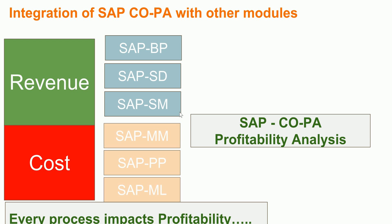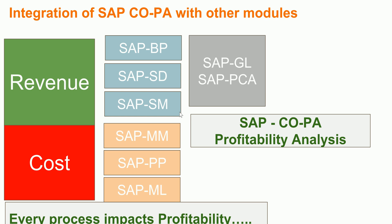On the cost side you have the Materials Management module, the Production Planning module, and inventory management which handles inventory. You can also think of actual costing concepts such as the Material Ledger. There are many other modules, but these are the highest level. The SAP GL naturally records all your revenue and cost.